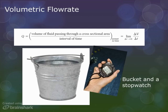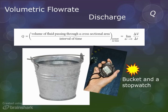The first variable we will introduce is the volumetric flow rate, also called discharge, also called Q. The simple way to think of discharge is to run water into a bucket and time it with a stopwatch. Gallons per second, liters per second.